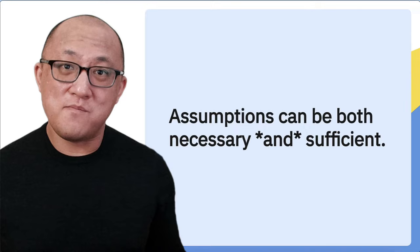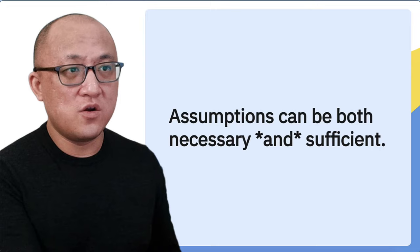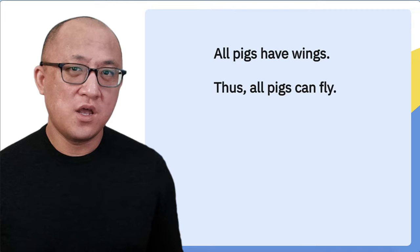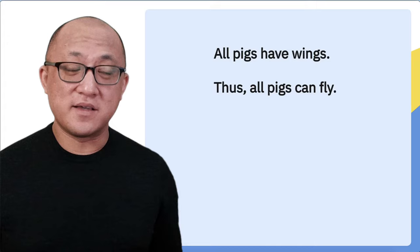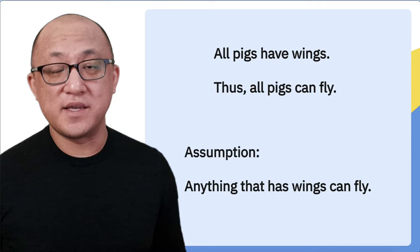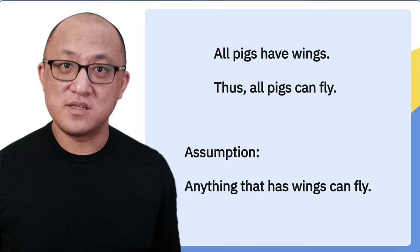On many different necessary assumption questions, as well as sufficient assumption questions, the right answer is indeed both necessary and sufficient. Here is a basic argument where the premise is 'all pigs have wings' and the conclusion is 'thus all pigs can fly.' If you're thinking about what this argument is assuming, probably you're thinking it's assuming that if something has wings, then that means it can fly. One way to phrase that would be: anything that has wings can fly.